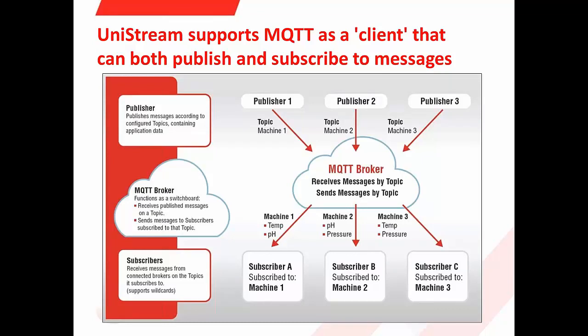MQTT was originally developed for low-bandwidth, high-latency data links, mostly used in the oil and gas industry. However, today MQTT is used for many applications beyond oil and gas — from controlling smart lighting systems to messenger applications and much more. Amazon Web Services recently announced that Amazon IoT is based on MQTT as well. Overall, MQTT appears to be the protocol best suited for industrial control systems, and adoption will only increase in the future.